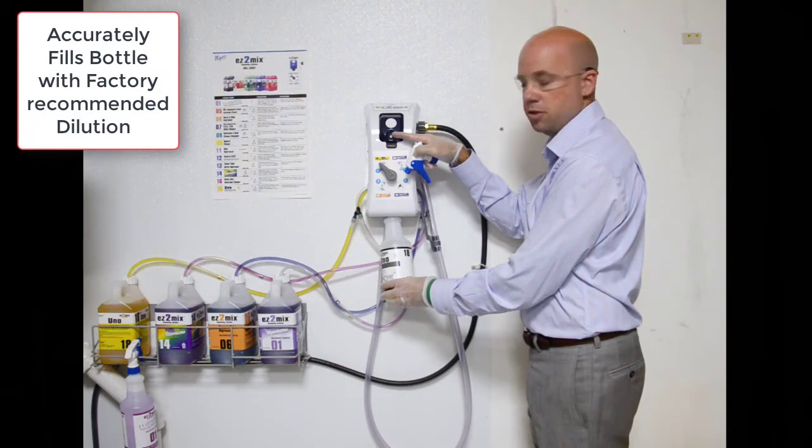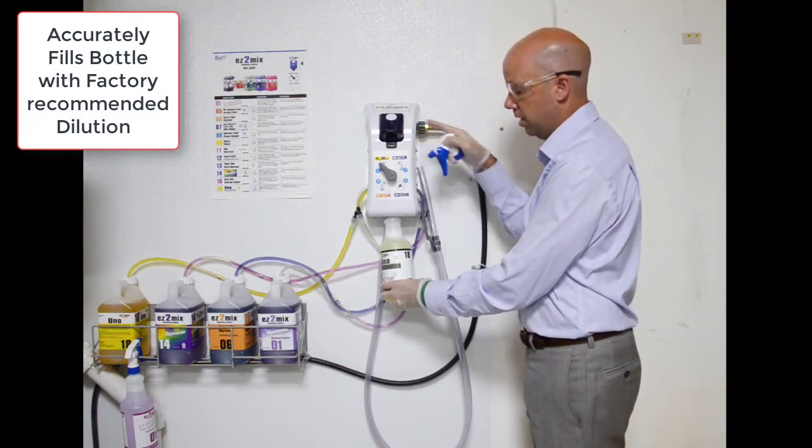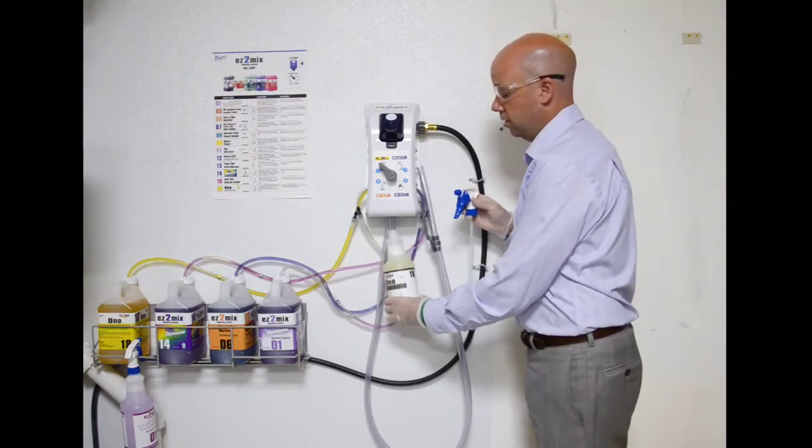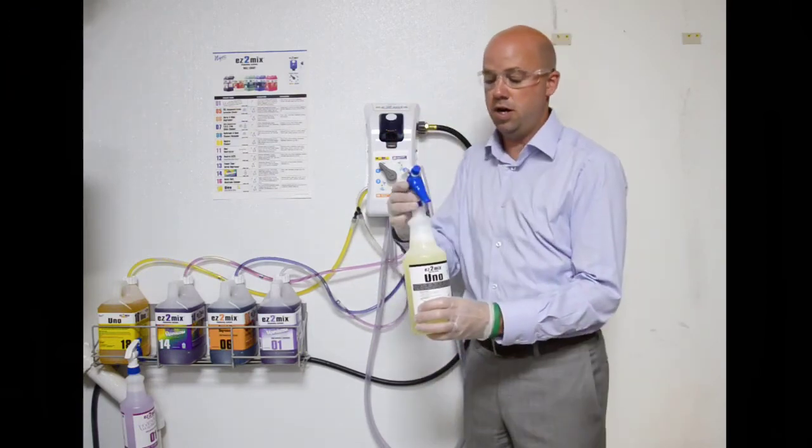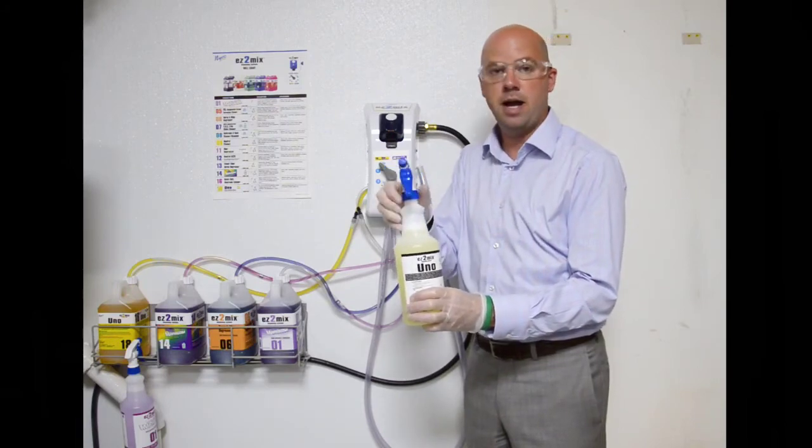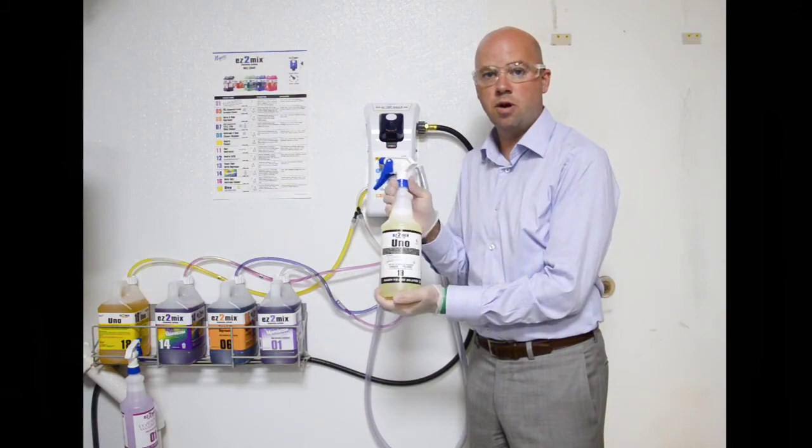This will accurately and precisely get you the correct dilution every time at the manufacturer recommended setting. When filled, simply remove the bottle from the tube and reinsert your sprayer. Now you are filled back up and ready to go with the properly diluted product for UNO number 18.